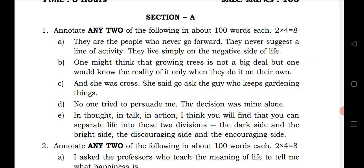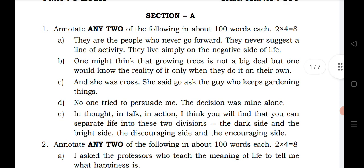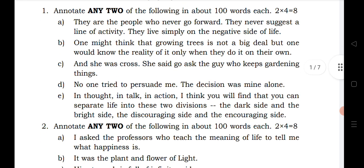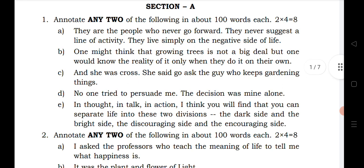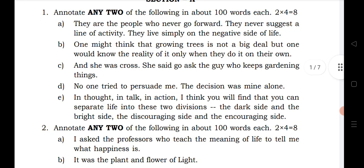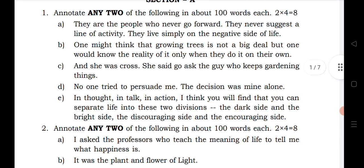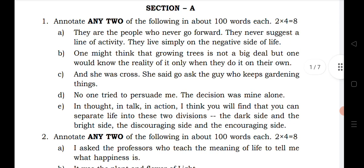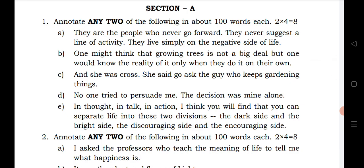In Section A, there are three parts: annotation, question-answer session, and short story. The first and second questions are from annotation. In Question 1, out of five questions you have to answer two. Question 1A is from 'Two Sides of Life,' B is from 'Green Champion,' C is from 'Father Dear Father,' D is from 'First Four Minutes,' and E is again from 'Two Sides of Life.' The board model paper gives two questions from 'Two Sides of Life,' making it a very important chapter. Reading all its annotations will help you get maximum marks.